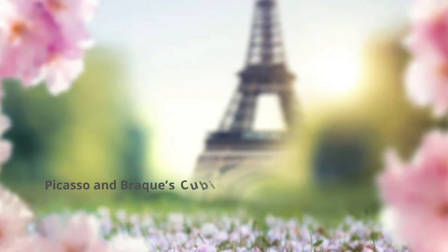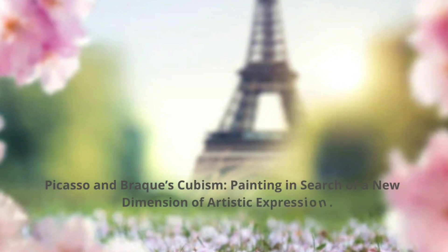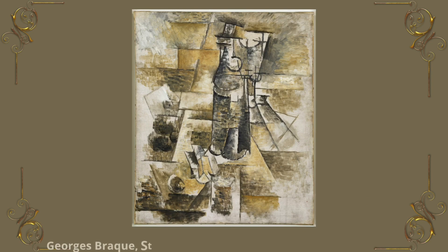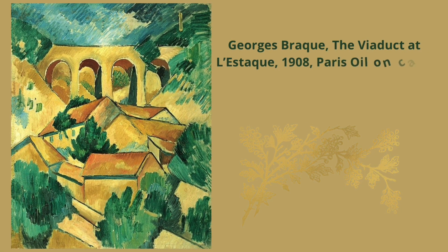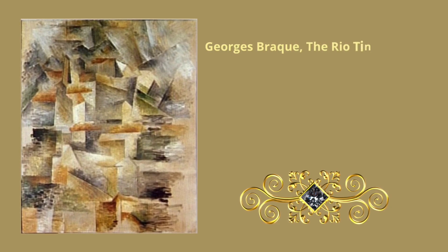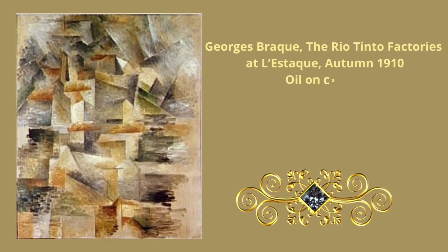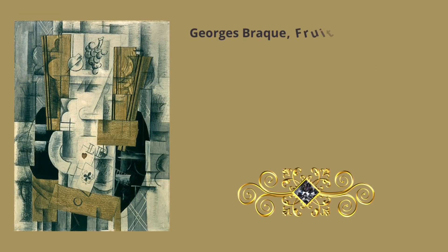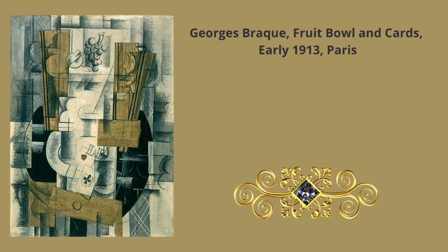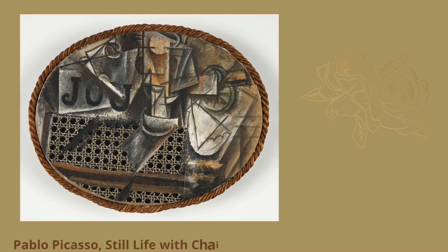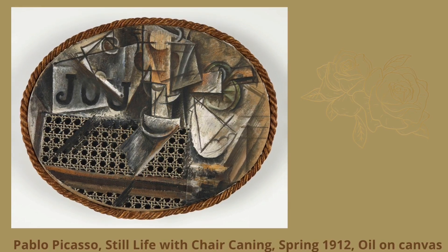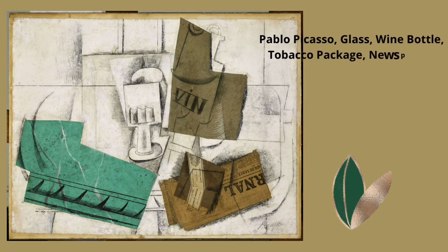Picasso and Braque's Cubism: a pictorial exploration. Between 1908 and 1914, Picasso and Braque embarked on an intense collaboration likened to mountaineering, where each advancement by one provoked a response from the other. Sharing their creative space and even forgoing the signing of their works, they cultivated an artistic synergy. Their paintings — whether of characters, landscapes, or still lifes — display such harmony that it becomes difficult to identify the creator of each piece. The term 'Cubism,' stemming from Matisse's comment describing a landscape by Braque as made of 'little cubes,' was quickly embraced by critics, and Picasso and Braque emerged as leading figures of this revolutionary art movement.